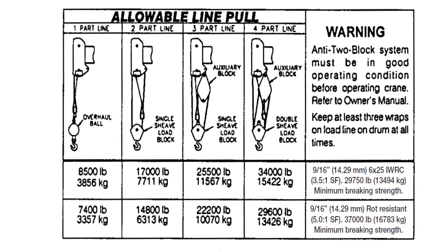Number 7: Allowable Line Pull. This section discusses what you can pick with different parts of line and the braking strength for each configuration.